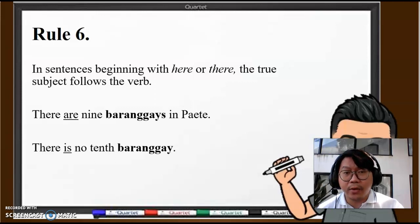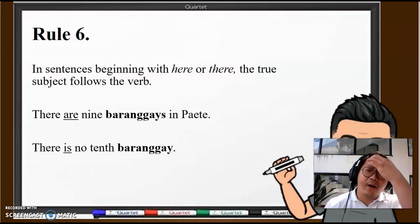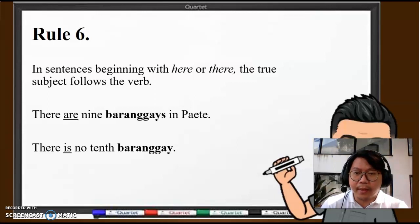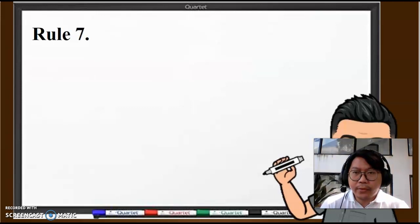On the other hand, look at this example: "There is no tenth barangay," singular. So we use "is." I hope that is clear. When there's "here" or "there," those are not the subject. You have to look for the true subject of the sentence, and normally they follow the verb when the phrasing is like this.